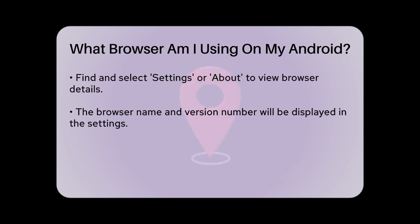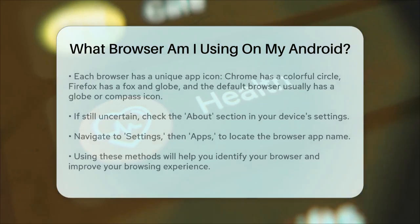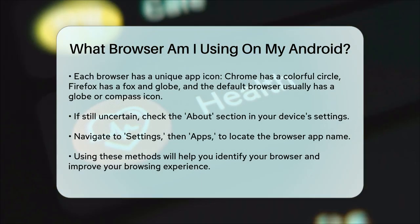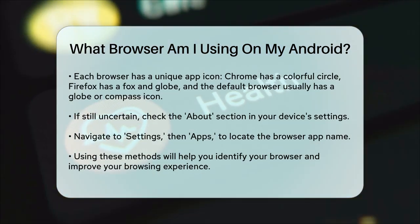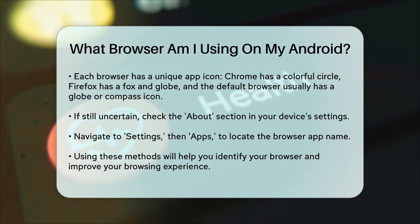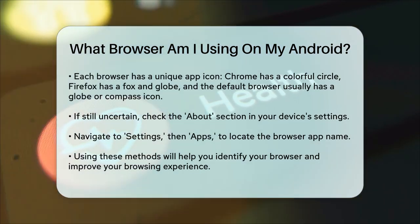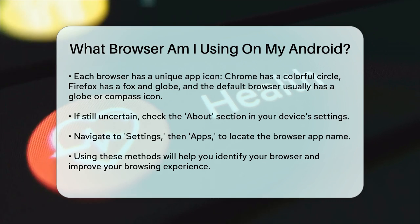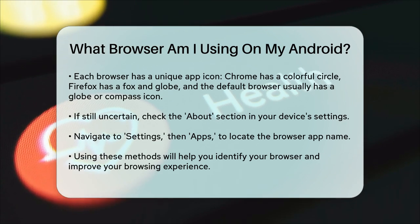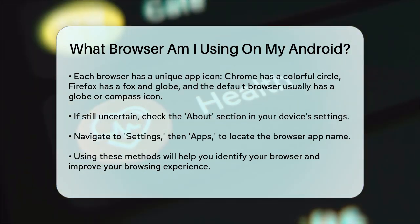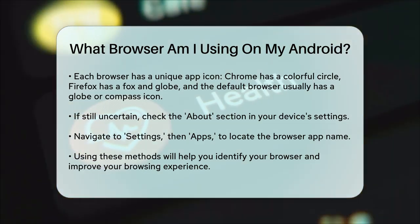If you're still unsure, you can also check the About section in the settings of your device. Go to Settings, then Apps, and look for the browser app. The name of the app will be listed there.